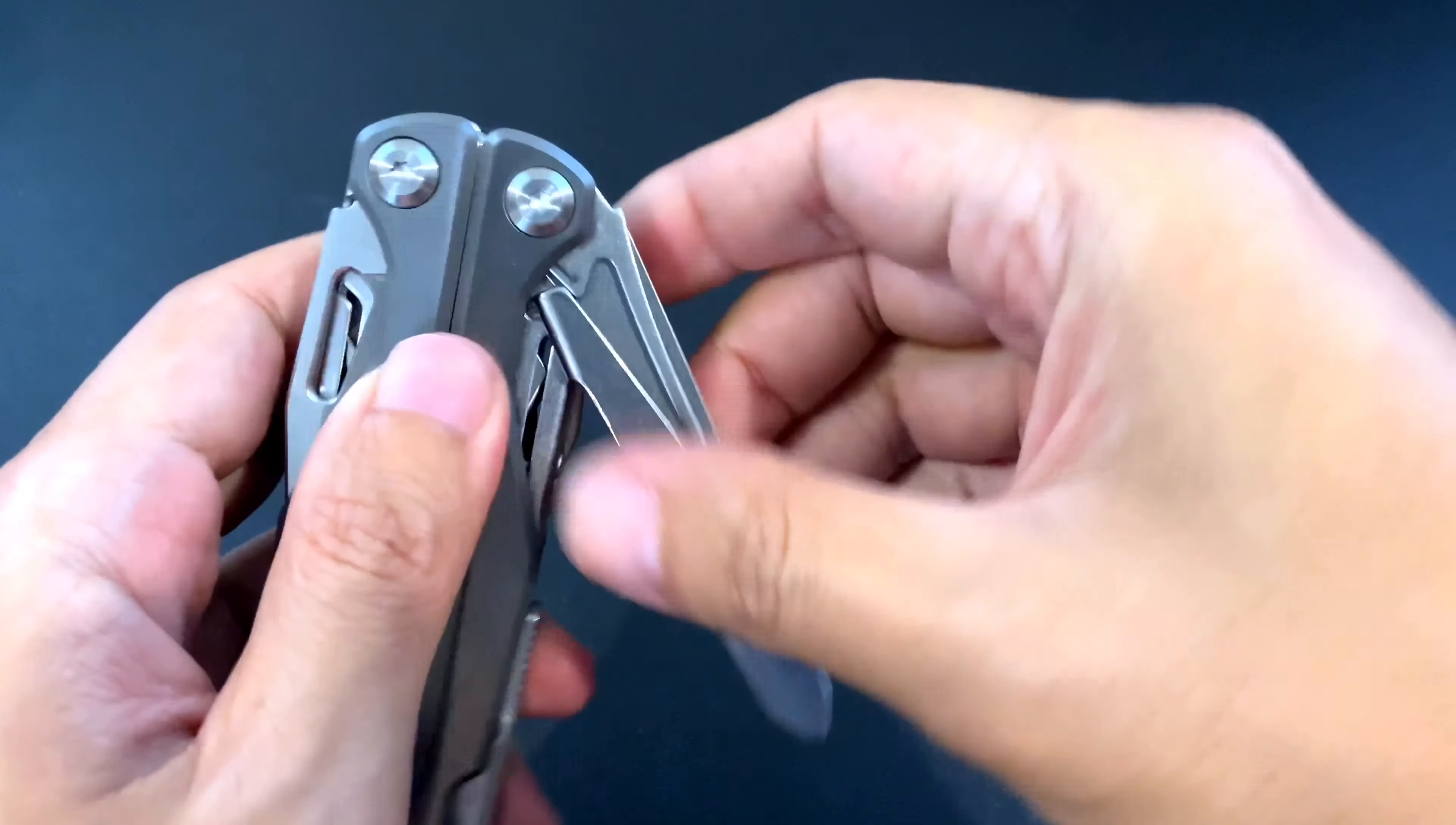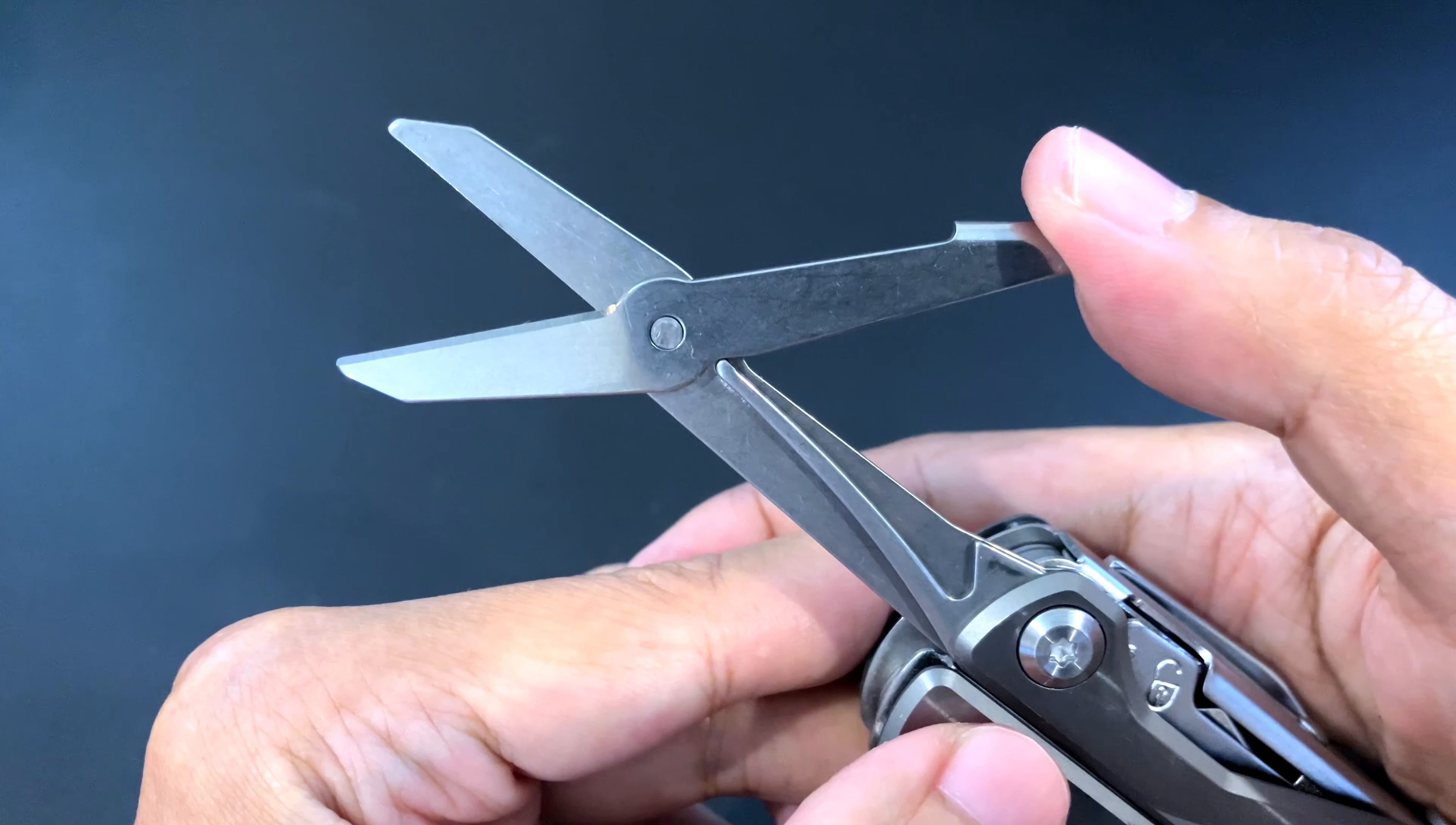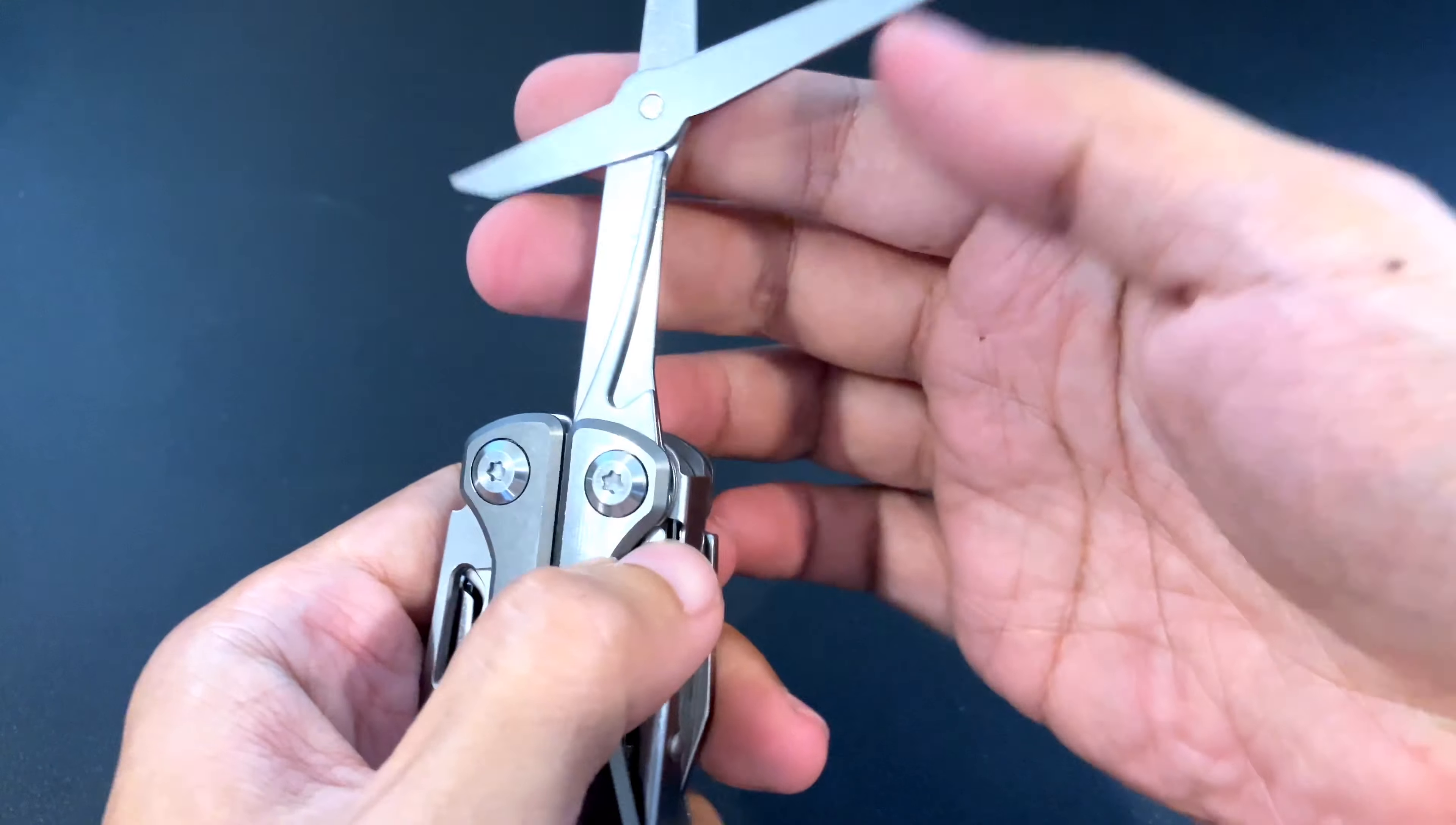And then we have here scissors, big scissors. This is a major feature of this tool, a full size pair of scissors. They look good and they look sharp. They feel sharp also. It's also lockable.